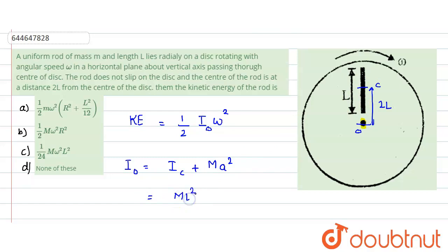So from here to here distance is 2l. What is the moment of inertia of the rod about its center? It is ml square divided by 12 plus m, what is this a square? That means 2l square, 4l square. So I value would turn out to be about o, would turn out to be ml square.